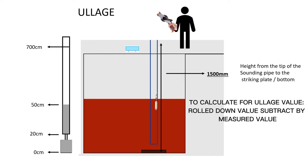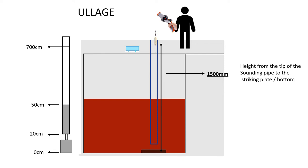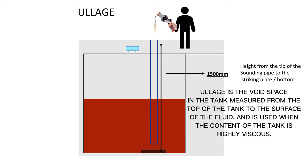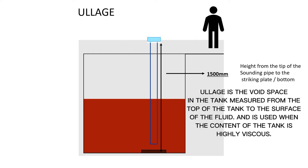To calculate for ullage value: roll down value subtract by measured value. 700 minus 50 equals 650. 650 cm is the measured ullage. Ullage is the void space in the tank measured from the top of the tank to the surface of the fluid and is used when the content of the tank is highly viscous.